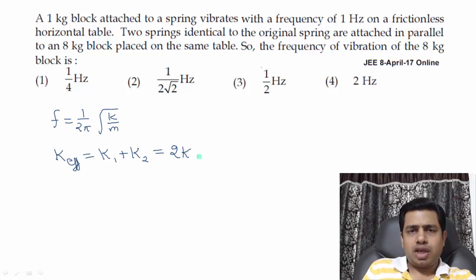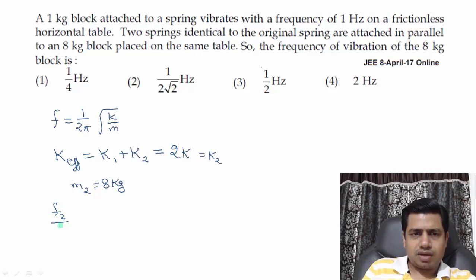We can call this k2. And m2 is 8 kg. And k1 is equal to k, the spring constant of one spring. And m1 is 1 kg. We need to find the frequency. Basically we'll talk about the ratio f2/f1. Only proportionality matters here. 1/(2π) is constant. So frequency is proportional to √(k/m).